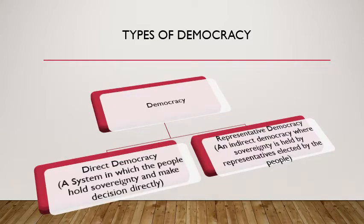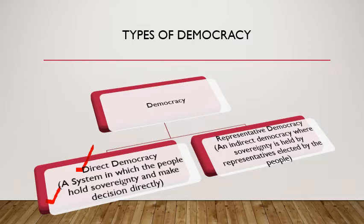There are two types of democracy: direct democracy and representative democracy, also called indirect democracy. Direct democracy is a system in which the people hold sovereignty and make decisions directly — for example, the Panchayati Raj system that exists in villages. In a representative democracy, sovereignty is held by representatives elected by the people. This is common in countries with large populations, such as India, where representatives of the people hold power in government.